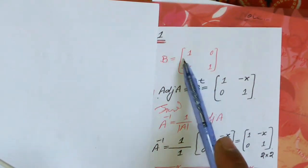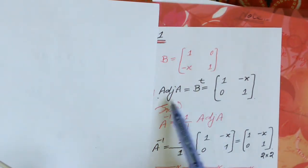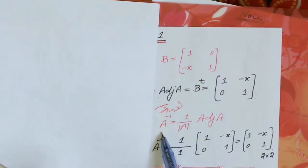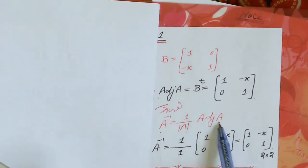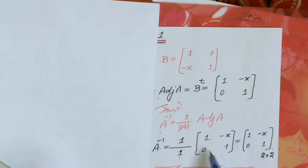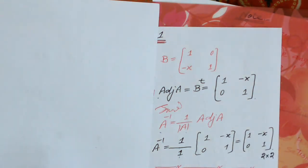Taking the transpose of the cofactor matrix by interchanging rows and columns, we get the adjugate of matrix A. The inverse of the matrix is calculated using the formula: A inverse equals 1 divided by the determinant of A, multiplied by the adjugate of A. Since the determinant equals 1, we multiply each element of the adjugate matrix by 1, giving the inverse of matrix A with elements 1, 0, -1, 1.